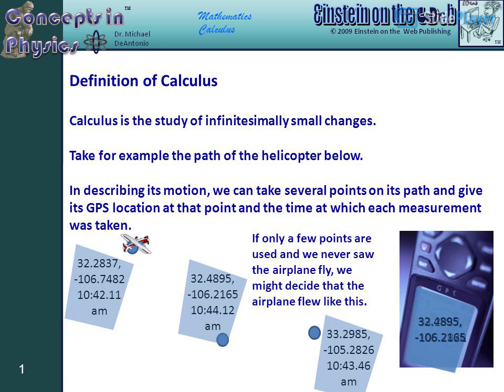In describing its motion, we can take several points on its path and give its GPS location at that point and the time at which each measurement was taken.